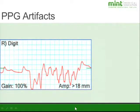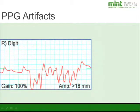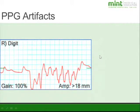With PPG waveforms, we are concerned about artifacts. If the patient is moving at all, you'll get a raggedy appearance. PPG sensors are extremely sensitive to movement, so if you see that type of artifact, the patient was probably twitching.